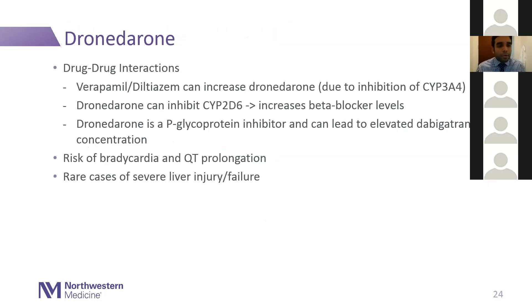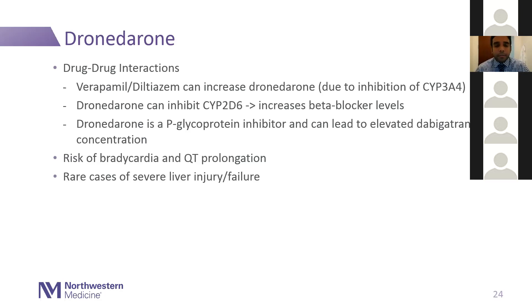Important drug-drug interactions for dronedarone: verapamil and diltiazem can increase dronedarone levels through inhibition of CYP3A4. Dronedarone itself can inhibit CYP2D6, a major metabolizing pathway for beta blockers, so beta blocker levels can be increased when on dronedarone. Dronedarone is also a P-glycoprotein inhibitor, and dabigatran is metabolized through the P-glycoprotein pathway — so dronedarone can lead to elevated dabigatran levels. There is a risk of bradycardia and QT prolongation with dronedarone, and rare cases of severe liver injury or liver failure.